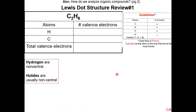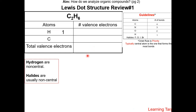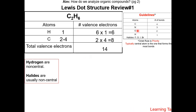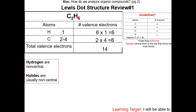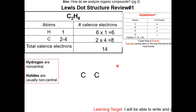Now let's apply the same strategy to organic compounds. Let's look at C2H6. Let's first count the total valence electrons. Each hydrogen has one valence electron and each carbon has four, so the total is 14. Each carbon typically forms four bonds and each hydrogen typically forms one bond. Therefore, carbon will be the central atom, and since there's two carbons, there'll be two central atoms. We're going to place the hydrogens around carbon.